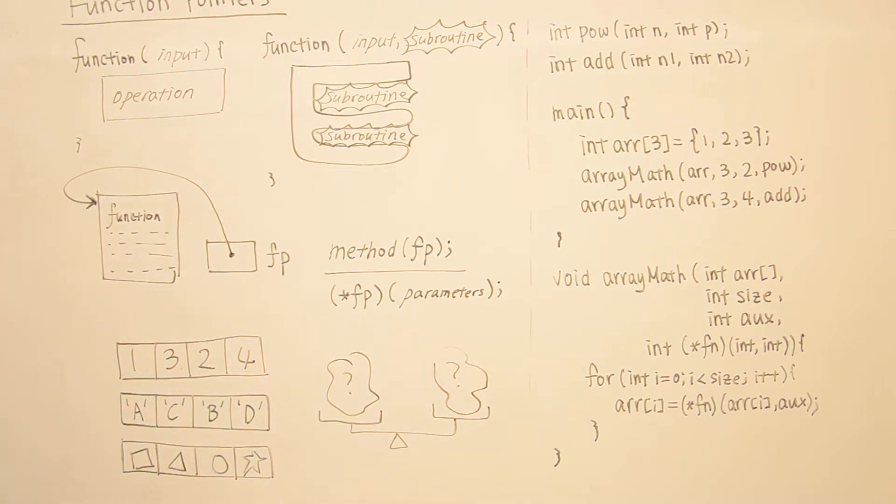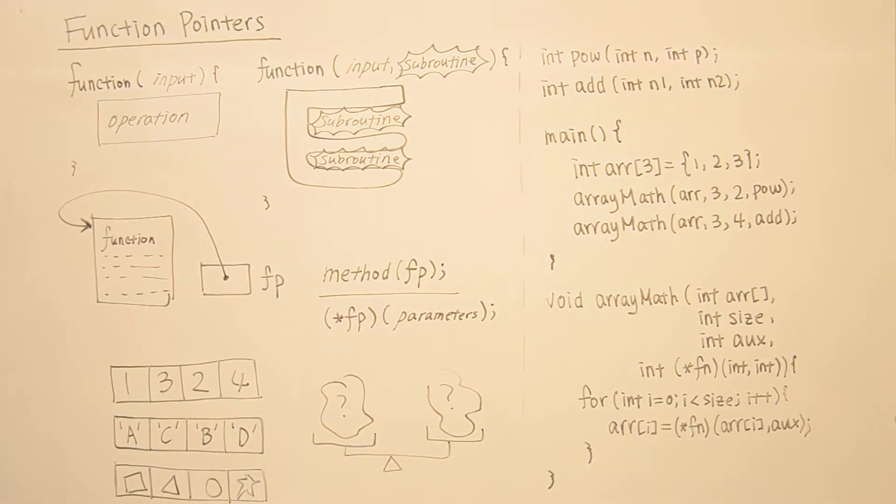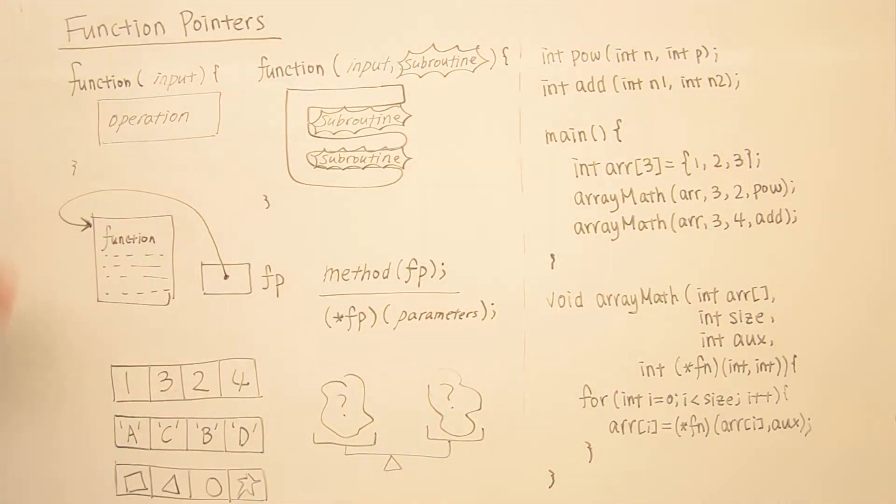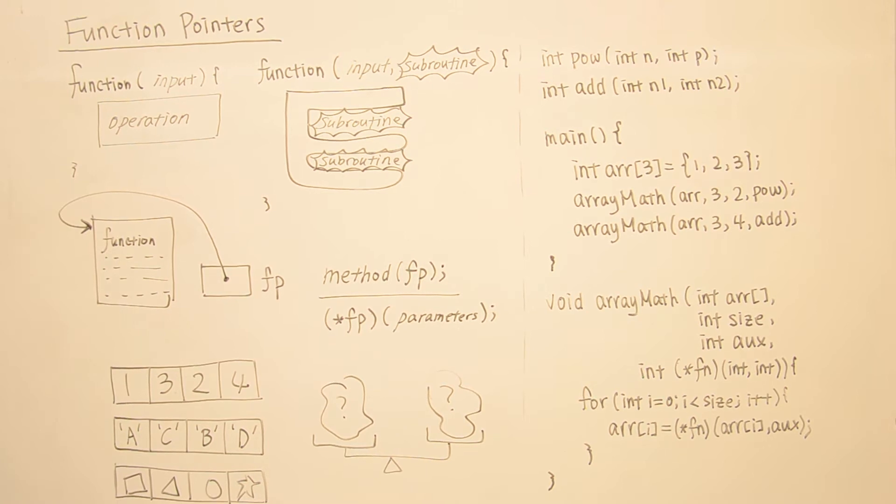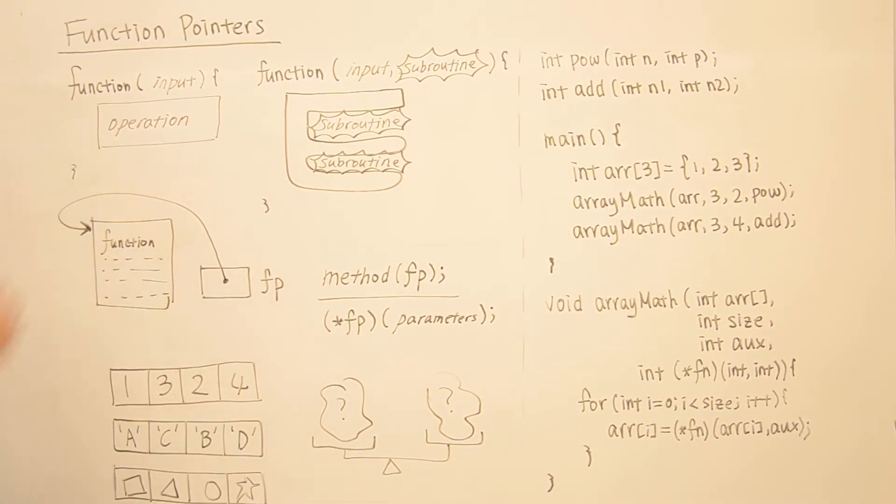Okay, let's talk about function pointers in C. So when we have a function in our program, we usually take in an input and do some operation on it. But here, the problem is that we can't really change what we do with this function. The functionality of this method is totally defined by what we have in this part of the code.